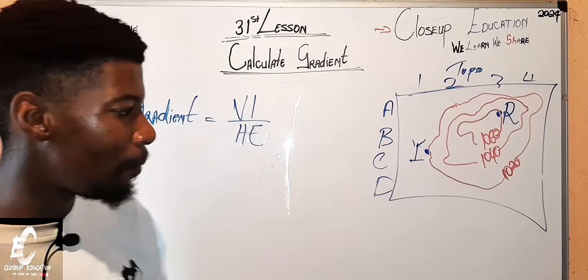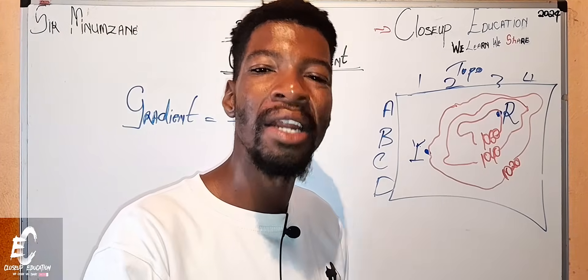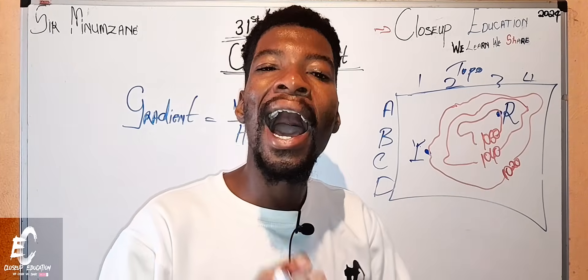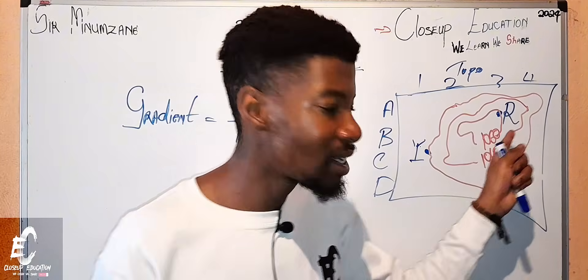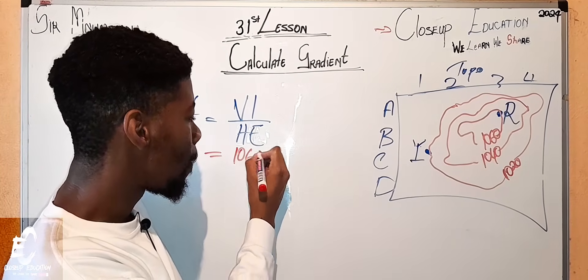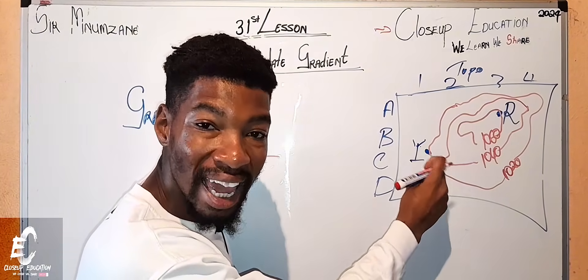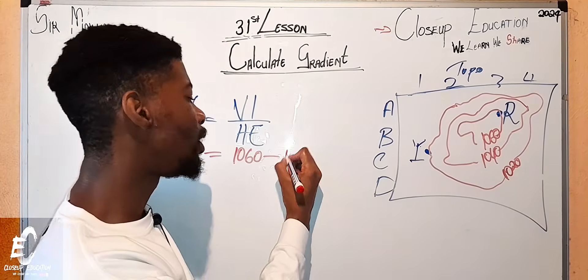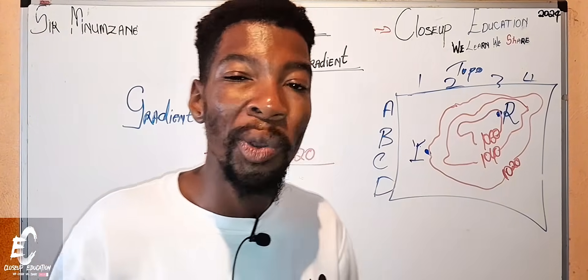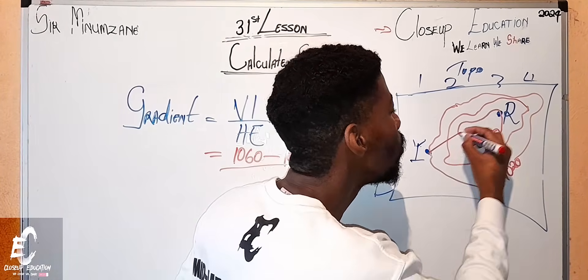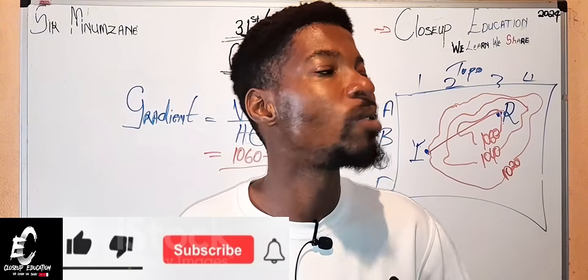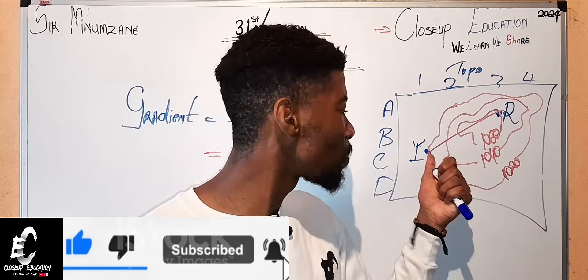How do you find the vertical interval? You start by asking: what does the question say? Calculate the gradient between the reservoir and the windmill. Which one has the biggest contour line interval? Obviously the reservoir, which is 1,060. So we say 1,060 minus the contour line of this windmill, which is 1,020. Then we divide. For the horizontal equivalent, you place your ruler from this point to this point. If you do not remember the points and spatial objects, watch the video I dropped before this one.